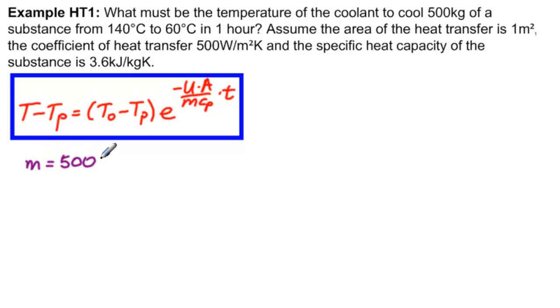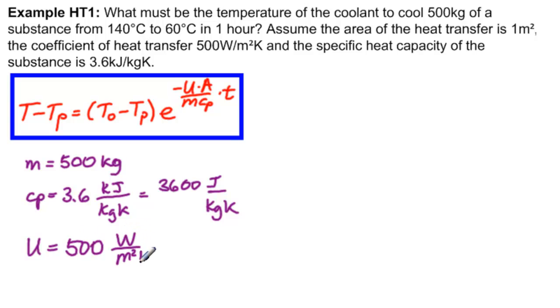Let's work on our numbers. M equals 500 kilograms. CP equals 3.6 kilojoules per kilogram Kelvin. We're going to have joules, so let's write that as 3600 joules per kilogram Kelvin, so these kilograms will cross those kilograms. U is 500 watts per meter squared Kelvin. Watt is a joule per second, so 500 joules per second meter squared Kelvin. A is 1 meter squared.